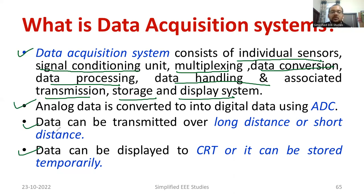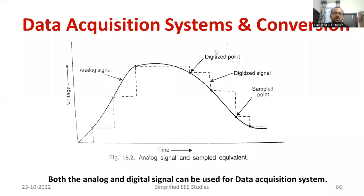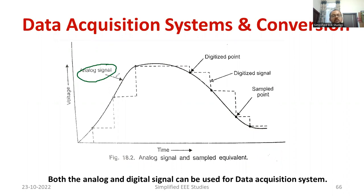Based on the requirement, you have to perform the data acquisition. You can observe the importance of DAC and ADC in a data acquisition system. The graph represents the conversion: the analog signal is going to be converted into a digital signal. From the analog signal, you identify certain points using the analog to digital conversion process. These points are called sample points, and this is generally called digitized points. This is what exactly happens in the case of an ADC, analog to digital converter.